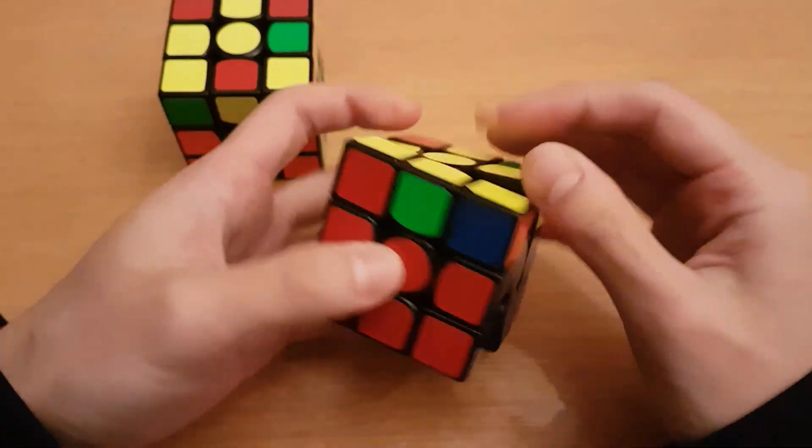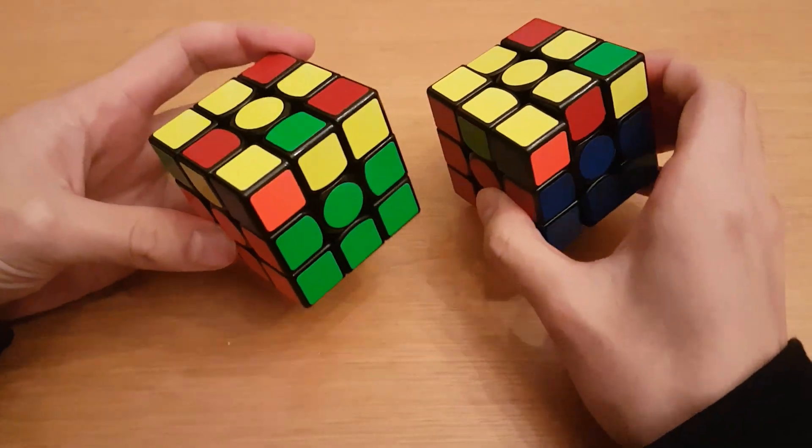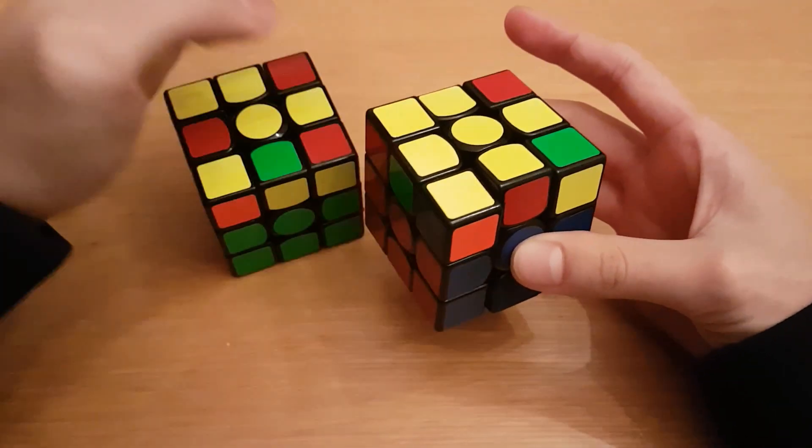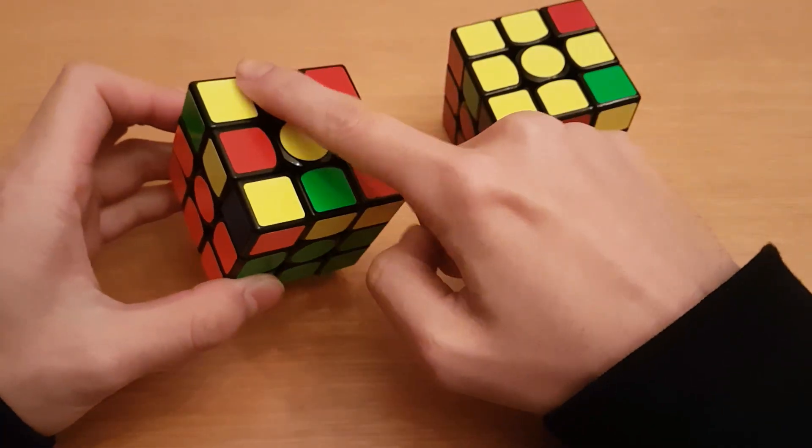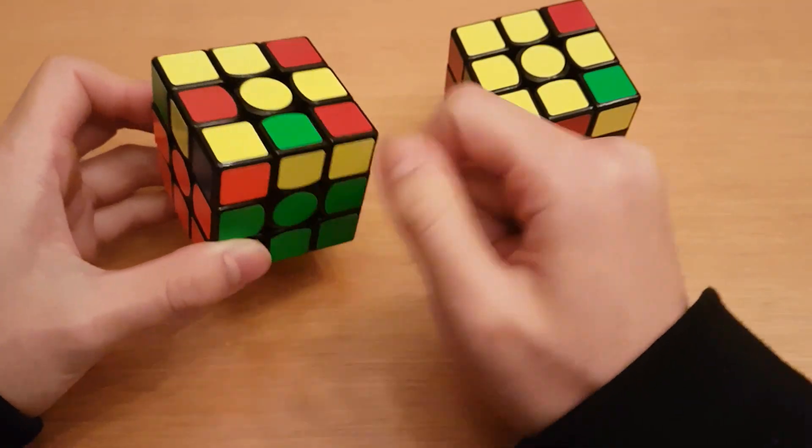This is the same corner orientation, this tOLL - pretty sure everybody using 2-look OLL can recognize that, but this one is the same thing, just with the edges not oriented.